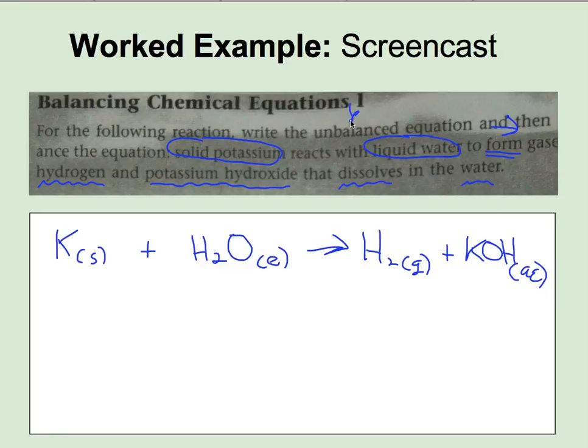They tell us that this reaction is unbalanced. So we're going to go through and balance it using the atom tally we learned in class. The three elements are potassium, hydrogen, and oxygen.